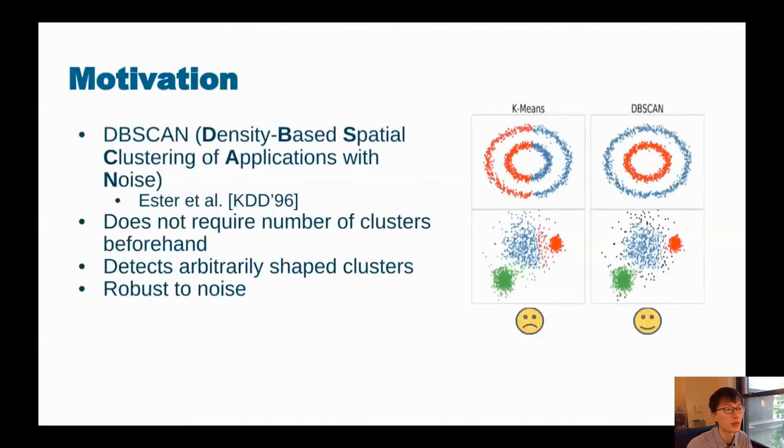DBSCAN stands for Density-Based Spatial Clustering of Applications with Noise. It was invented in 1996 by Ester et al. It has a number of advantages. It doesn't require the number of clusters beforehand. It detects arbitrarily shaped clusters as shown by the first row example. It's also robust to noise as shown by the second row example.